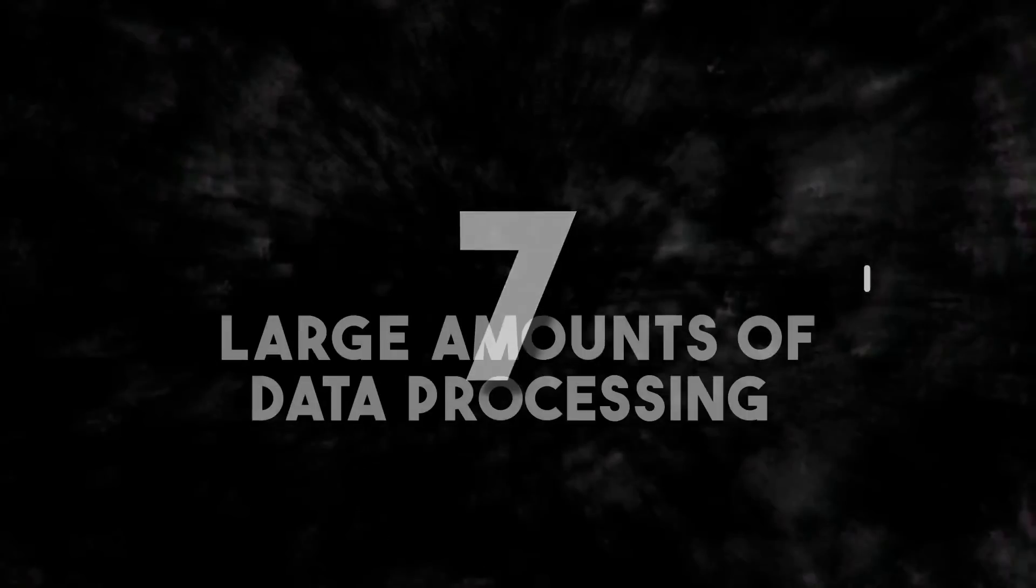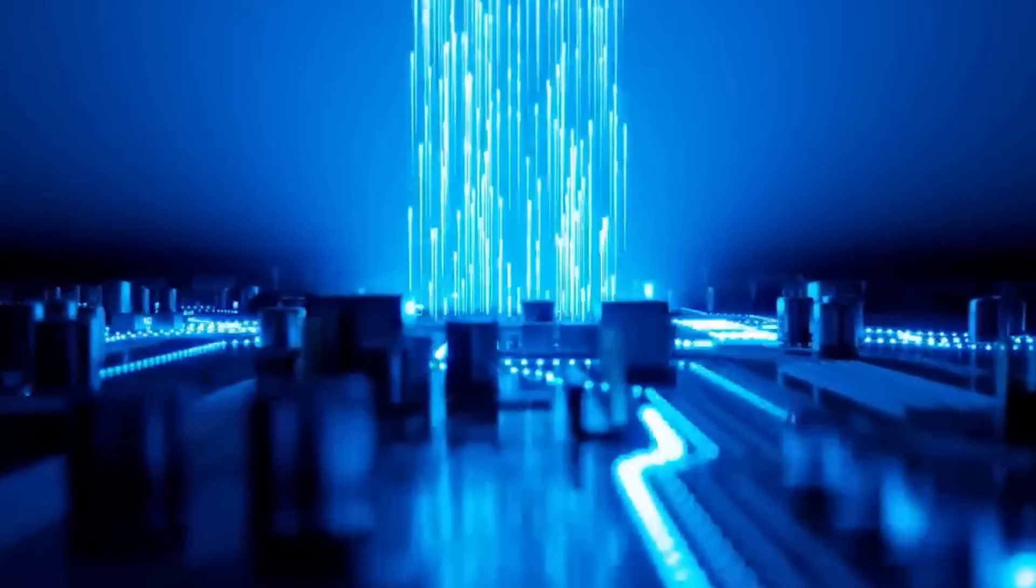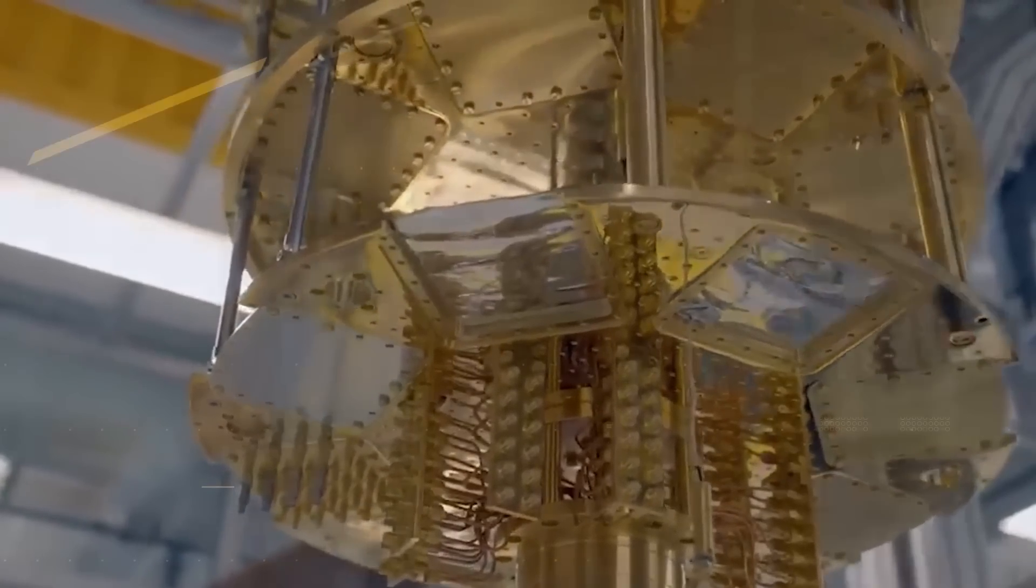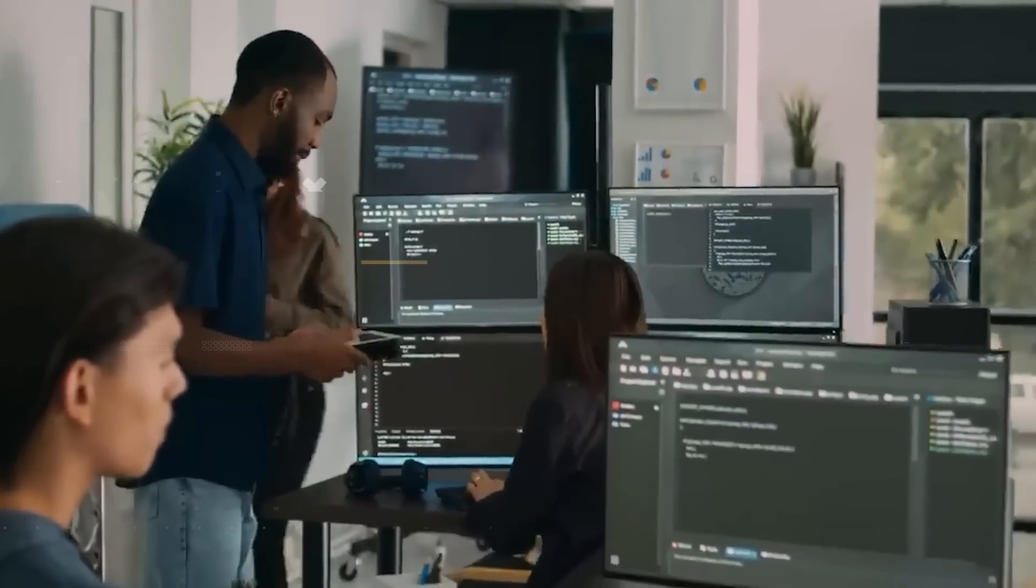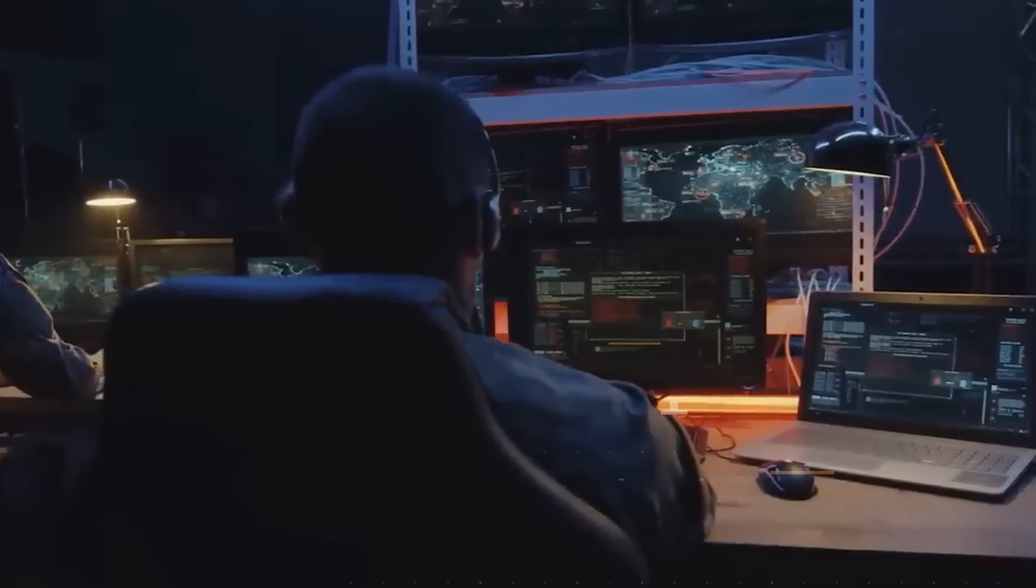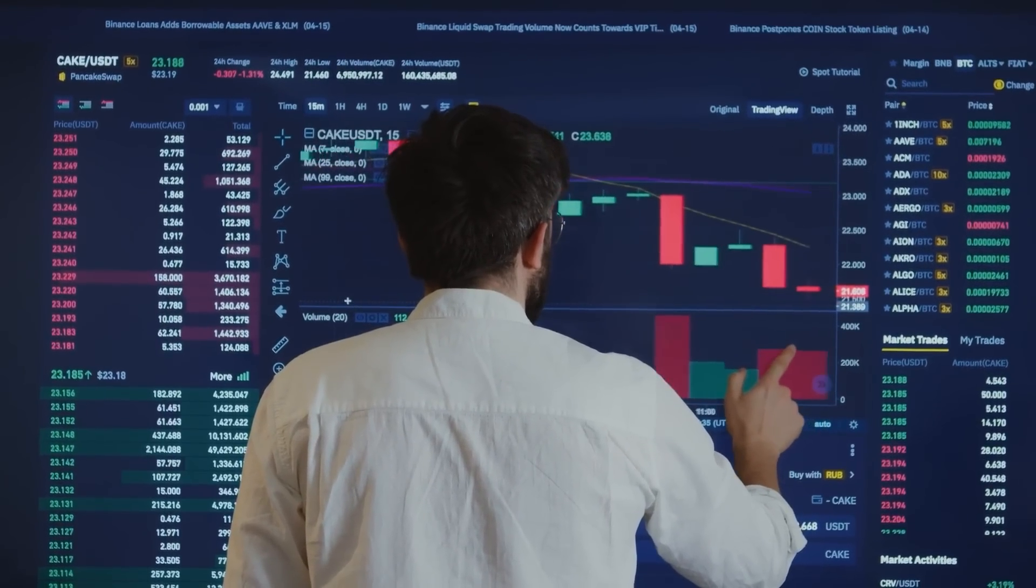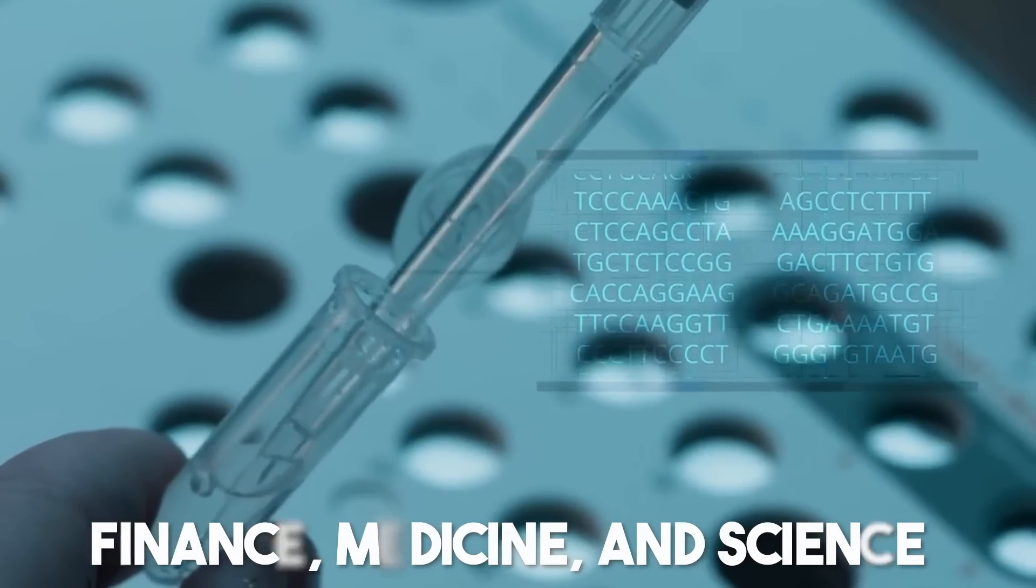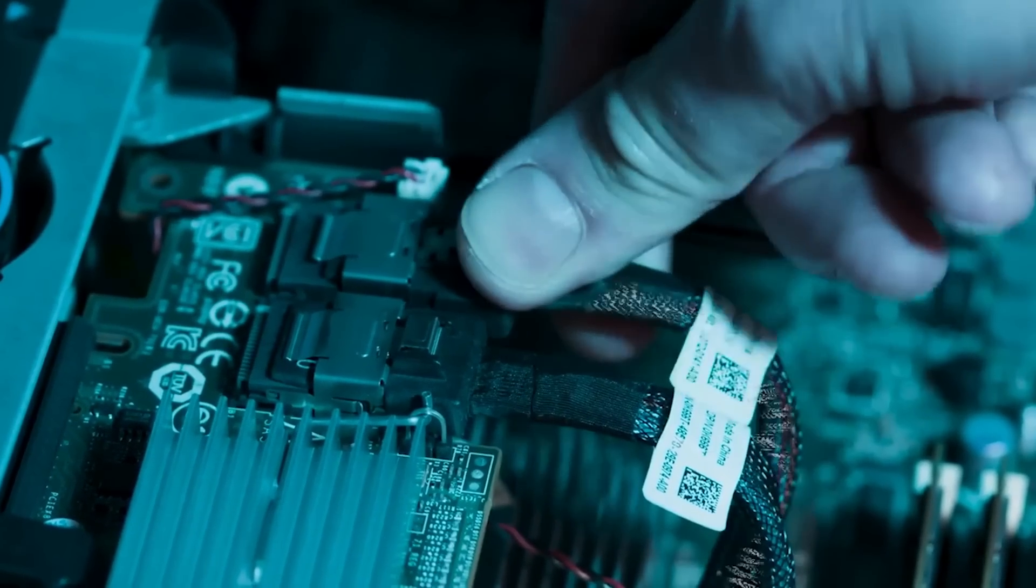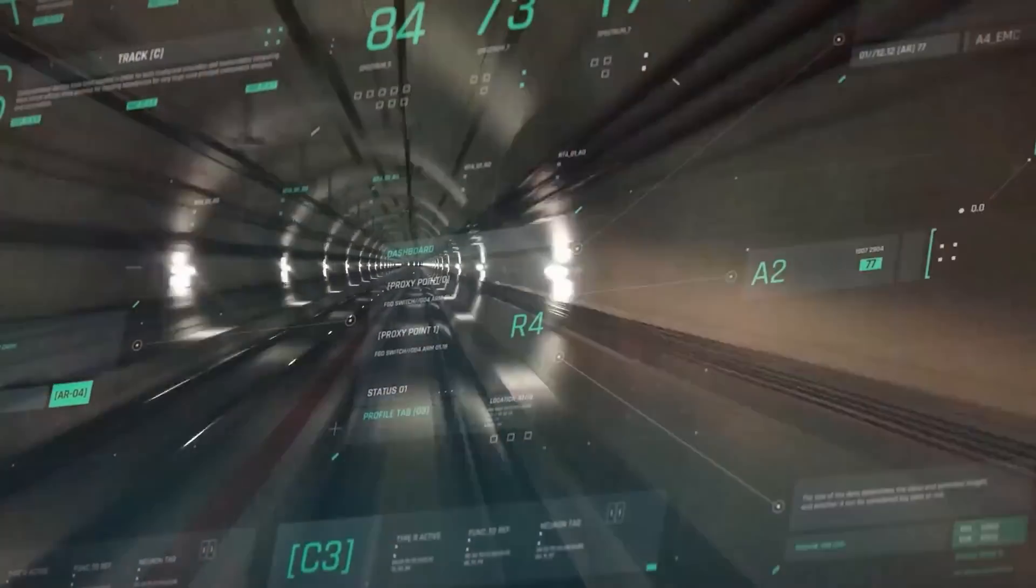Number seven, large amounts of data processing. The quantum internet is a total game changer for computing power. It's a supercharged computer that works way faster than regular ones. With the quantum internet, we can process huge amounts of data super efficiently. Imagine how this could totally transform fields like finance, medicine, and science, where processing loads of data quickly and accurately is a big deal. It's like having a speed boost for all our data needs.